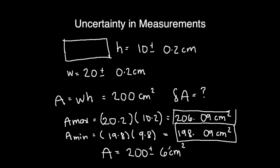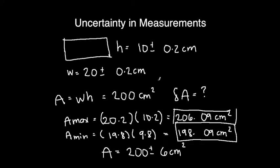It turns out that the area we should report is 200 plus minus 6 centimeters squared. Your uncertainty should be 6 centimeters squared. It's actually true: if you try to add 200 plus 6 it gives 206, and 200 minus 6 gives 194. You might ask how did I get the 6? Well, one way of getting this is by using a formula. I'm going to teach you this formula — this is something you need to know.